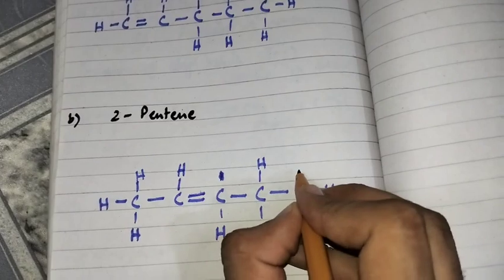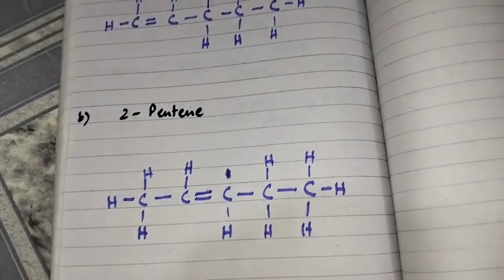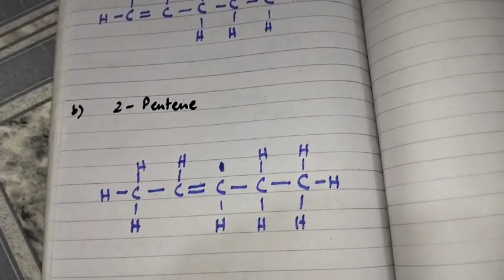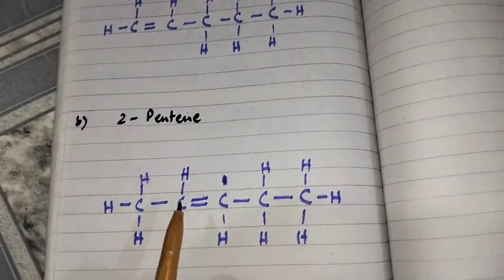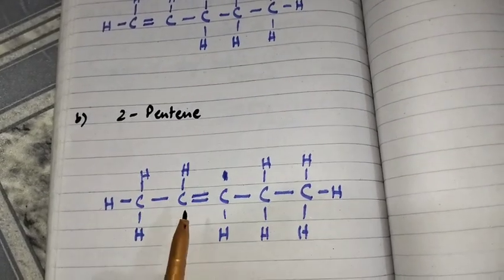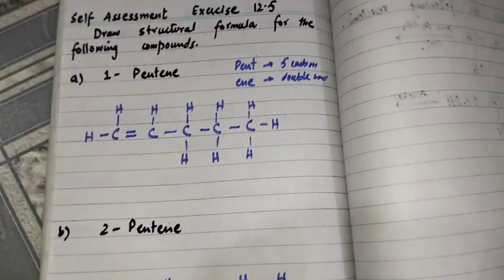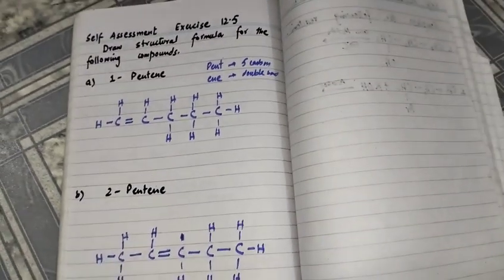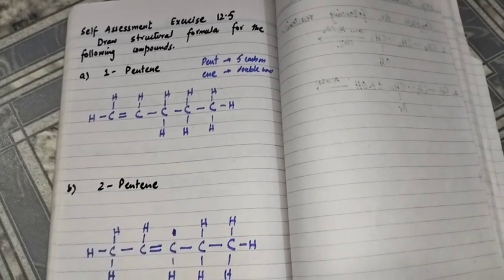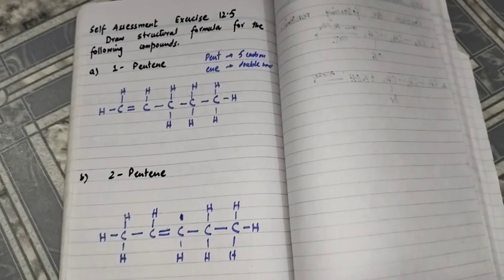The fourth carbon has two bonds, so two hydrogen atoms are attached. The last carbon atom forms three bonds with three hydrogen atoms. This is the structural formula for 2-pentene, in which the double bond is attached to the second carbon atom. This completes self-assessment exercise 12.5. In the next video we will start the next self-assessment exercise. Assalamualaikum.